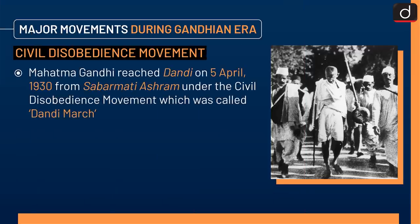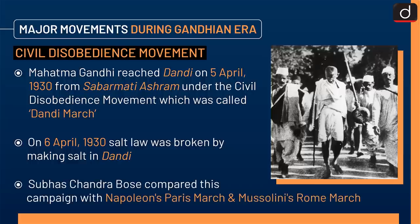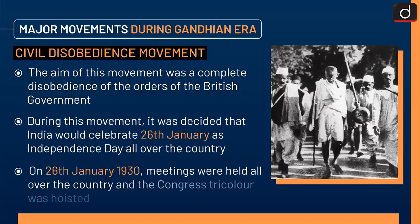Next is the Civil Disobedience Movement. Mahatma Gandhi reached Dandi on 5 April 1930 from Sabarmati Ashram under this movement, in what was called the Dandi March. On 6 April 1930, the Salt Law was broken by making salt in Dandi. Subhash Chandra Bose compared this campaign with Napoleon's Paris March and Mussolini's Rome March. The aim was complete disobedience of British government orders. During this movement, India decided to celebrate 26th January as Independence Day, and meetings were held all over the country on 26th January 1930 with the Congress tricolor hoisted.